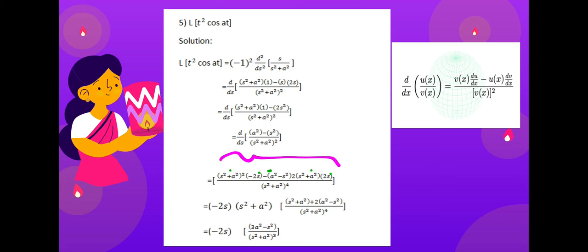After simplification: minus 2s(s² + a²) plus 2·2s(a² - s²), all divided by (s² + a²)⁴. This is the final answer for the Laplace transform of t²·cos(at).